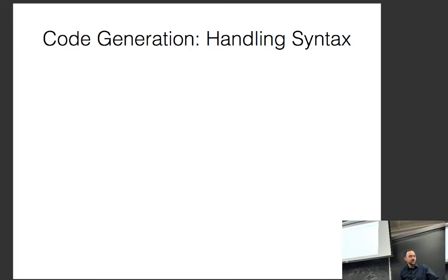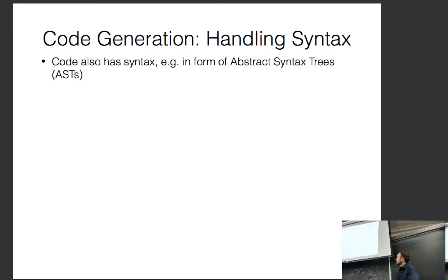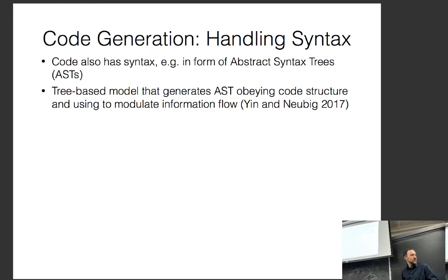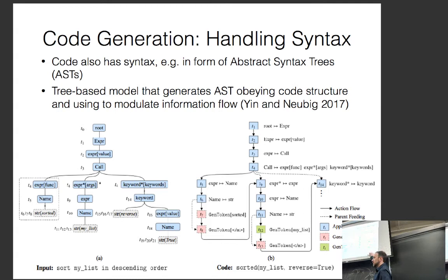Another important aspect of generating code or tree-structured representations is handling syntax appropriately. Code has very defined syntax in the form of abstract syntax trees (ASTs). When you put code into a compiler, parser, or interpreter, it turns the code into a tree-based representation used to interpret it. You can build a tree-based model that generates code obeying that AST structure.